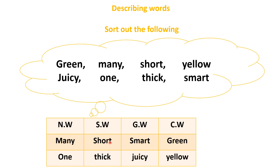In size words: short, thick, big, small, huge, long. In general words, some quality will be there — smart, juicy, happy, sad. In color words, any color will be there.